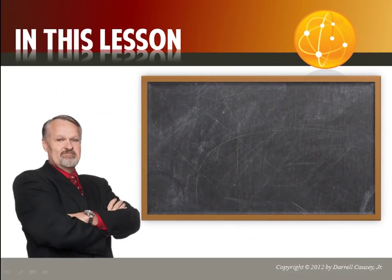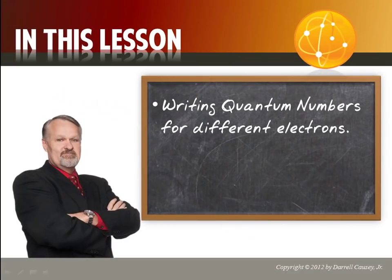In this lesson, you're going to learn about writing quantum numbers for different electrons. We're going to be able to pick out electrons from certain elements, and then we're going to write the four quantum numbers for them.